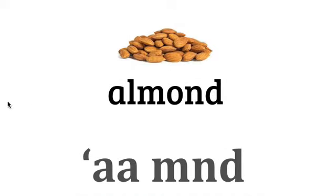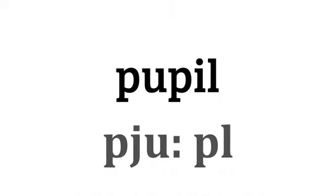The next word follows a similar pattern — we call it 'almond.' The L is again silent, so it's pronounced 'almond.'